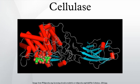Cellobiases or beta-glucosidases hydrolyze the exocellulase product into individual monosaccharides. Oxidative cellulases depolymerize cellulose by radical reactions, as for instance cellobiose dehydrogenase. Cellulose phosphorylases depolymerize cellulose using phosphates instead of water. Avicelase is almost exclusively exocellulase activity, since avicel is a highly microcrystalline substrate. There are also progressive and non-progressive types; progressive cellulase will continue to interact with a single polysaccharide strand, while non-progressive cellulase will interact once then disengage. Cellulase action is considered synergistic as all three classes together yield much more sugar than the addition of all three separately.